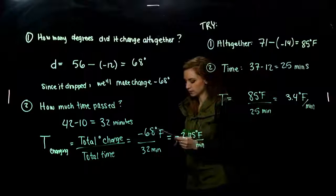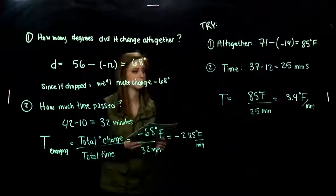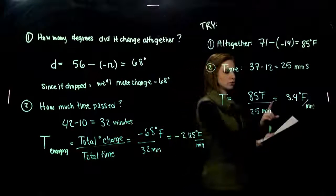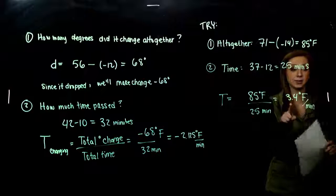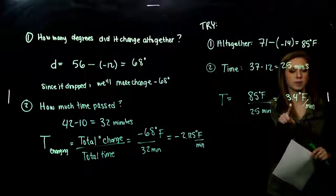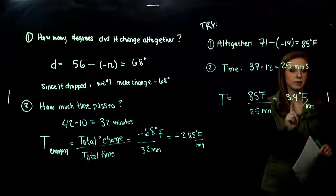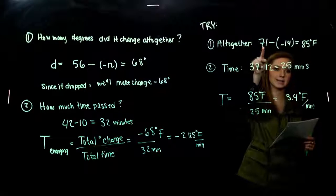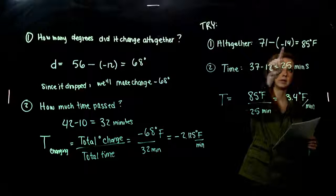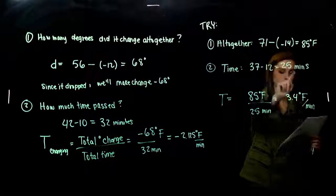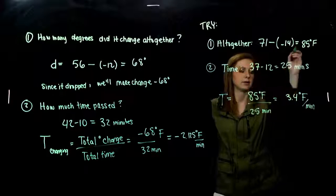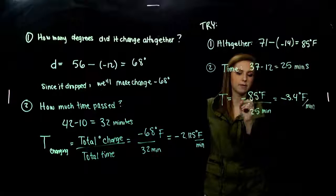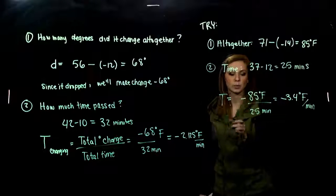But what do you notice about mine that's probably different than yours? What does this change tell me? This tells me I'm increasing at a rate of 3.4 degrees Fahrenheit per minute. But how is the temperature actually behaving? We started at a really big positive, pretty warm, and we went really negative. So we need to change this rate. In reality, we're talking about an 85 degree difference, but we were decreasing.